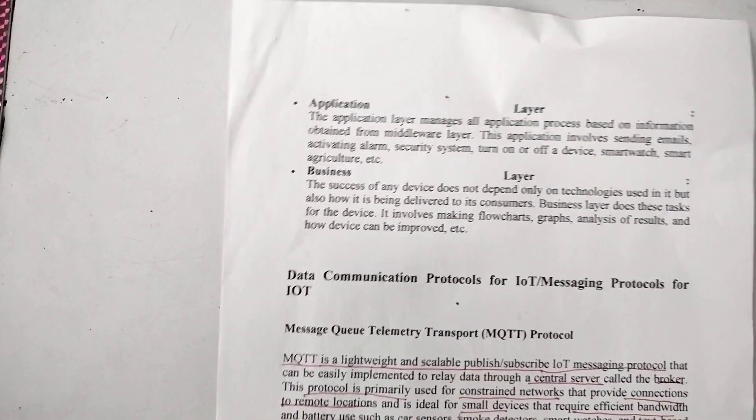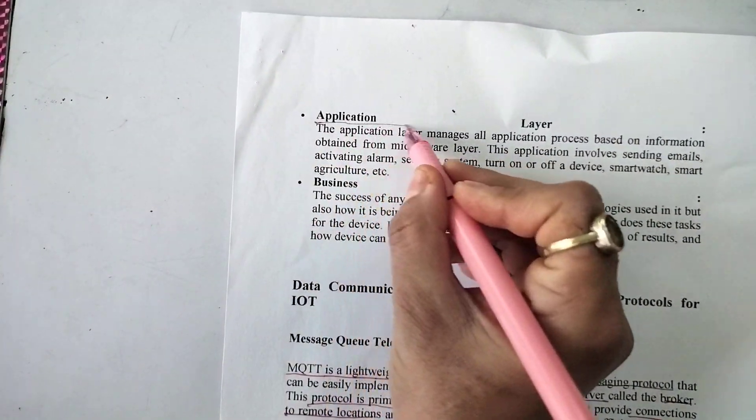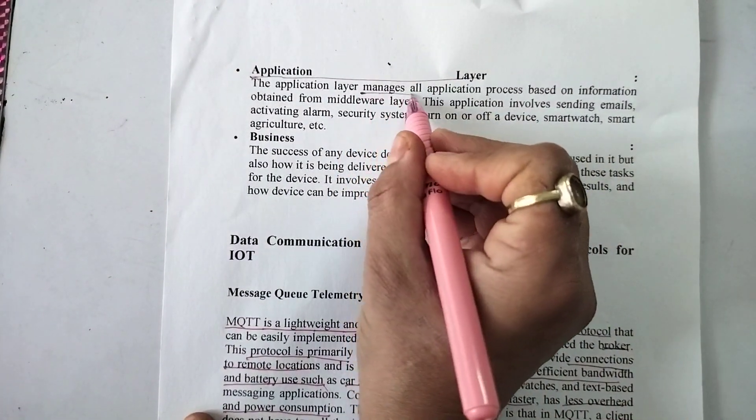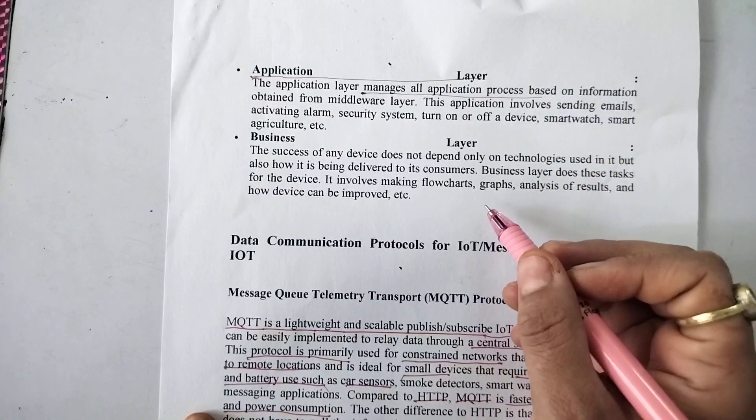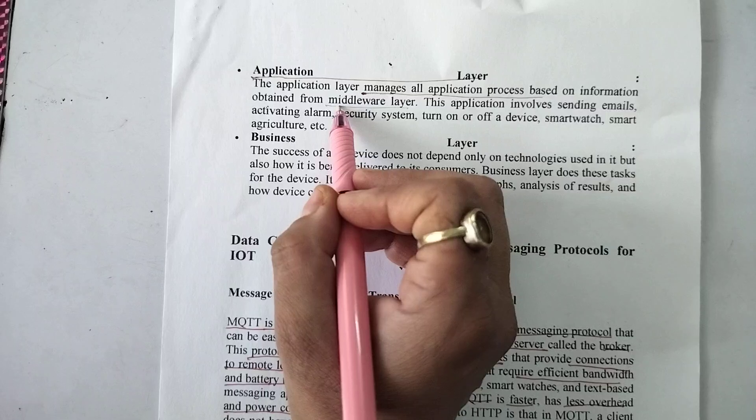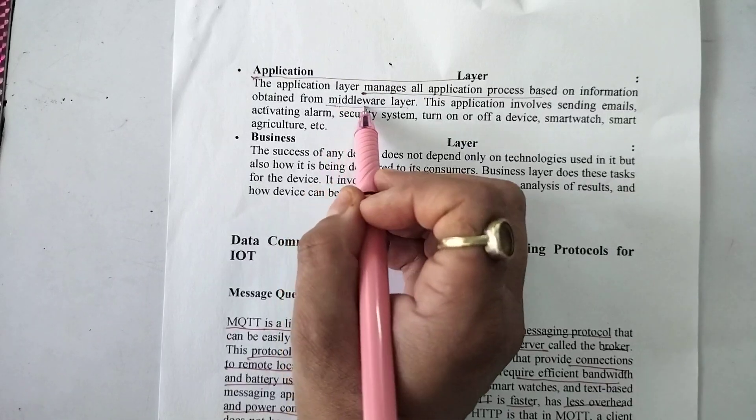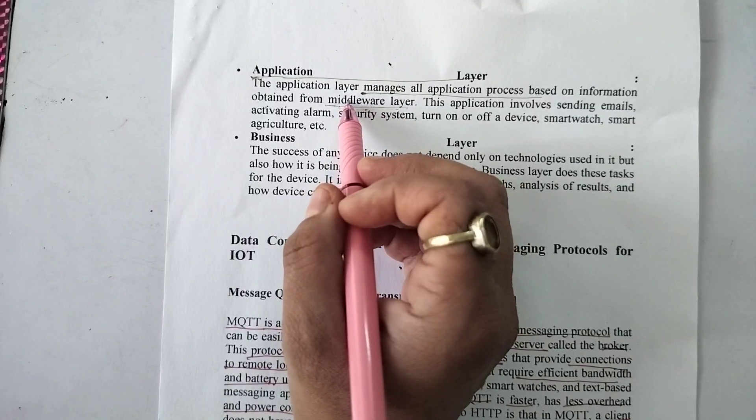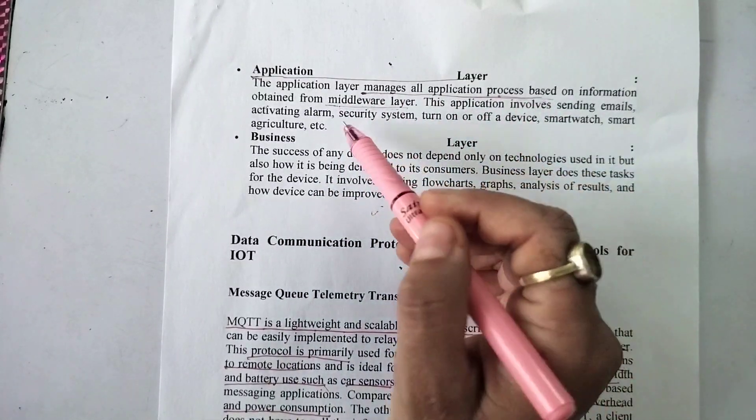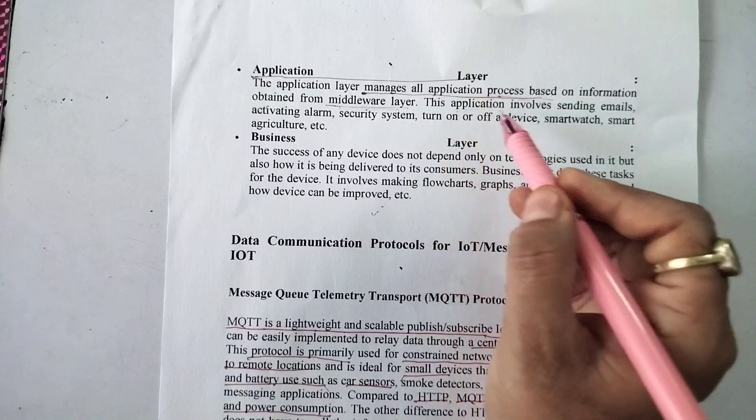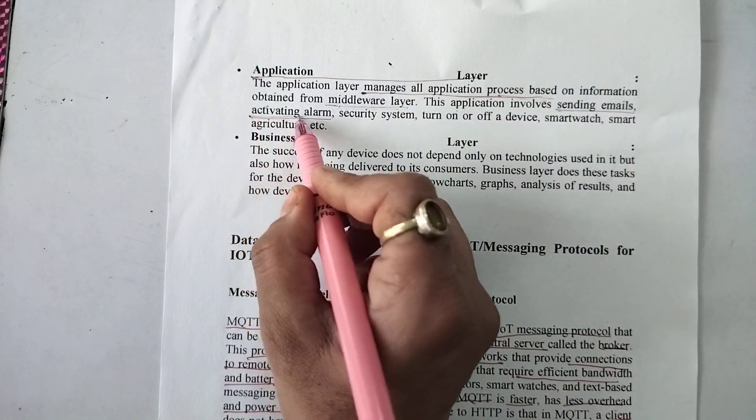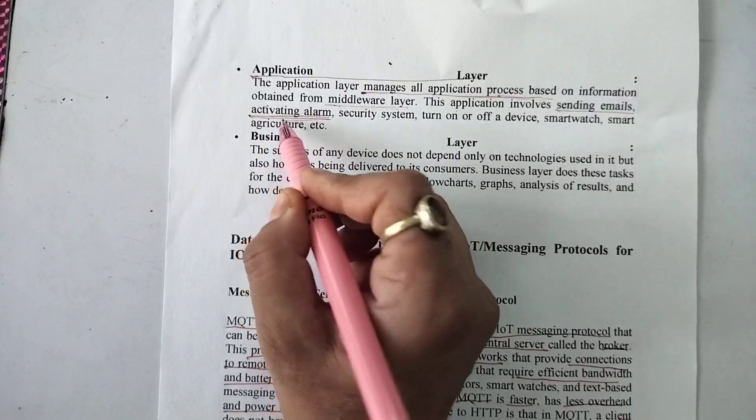The fourth layer of IoT architecture is the application layer. The application layer manages all that application process based on information obtained from the middleware layer. Whatever information it receives from the layer immediately above it, the middleware layer, the application layer manages all that application process based on that information. This application involves sending emails, activating alarms whenever an action has to be taken based on data obtained from sensors.